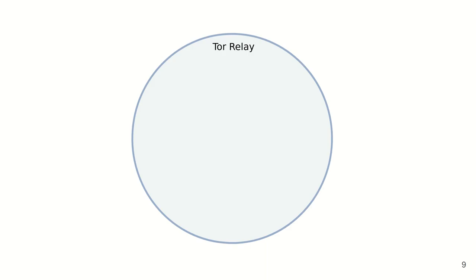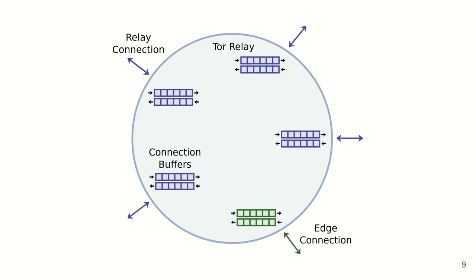Since our multi-threaded design is heavily influenced by Tor's existing relay design, we'll give a quick overview of the routing aspect of Tor relays. Here we have a Tor relay. The relay has many relay connections, which are connections to other relays and clients, and edge connections, which are connections to servers outside of the Tor network. These TCP connections all have incoming and outgoing socket buffers. For each circuit that passes through the relay, Tor uses circuit cell queues to link the client-facing connection with the destination-facing connection.